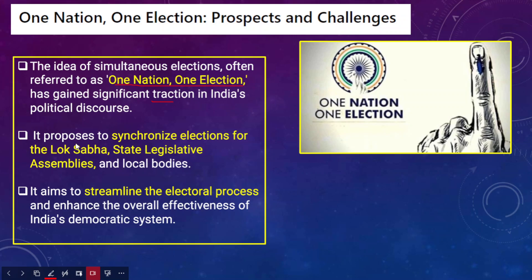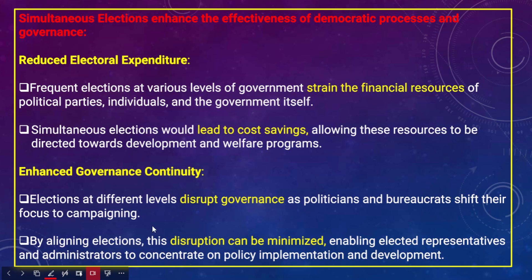One Nation One Election proposes to synchronize elections for both Lok Sabha and state legislative assemblies, meaning both will be conducted simultaneously side by side. It also aims to streamline the overall electoral process. The overall objective is enhancing the effectiveness of India's democratic system, conducting free and fair elections, and ensuring that public confidence in the voting system and democracy is maintained.